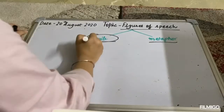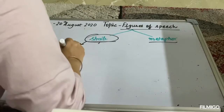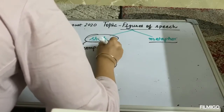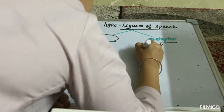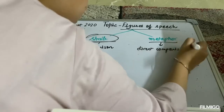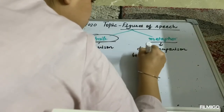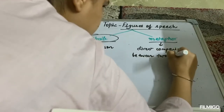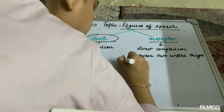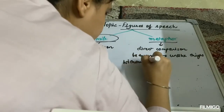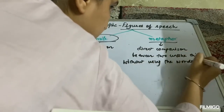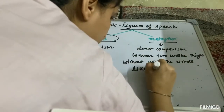In a simile there is no direct comparison, whereas in a metaphor there is a direct comparison between two unlike things without using the words 'like' or 'as'.